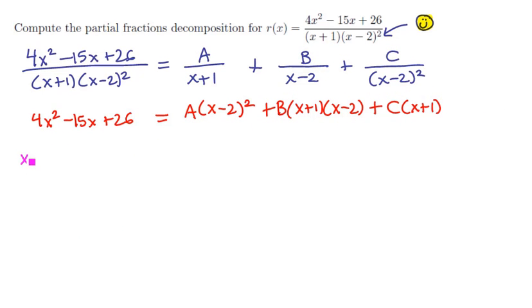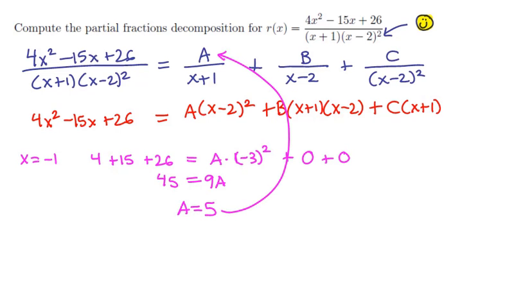To solve this equation, we can pick different x values. For example, if we pick x equals negative 1, we'll come up with the equation 4 plus 15 plus 26 is equal to a times negative 3 squared, plus a 0 term, plus another 0 term. This is a cleverly picked value. So if we simplify this, we get 45 is equal to 9a, and that means that a is equal to 5. So we found the first term, we'll replace this a by 5.